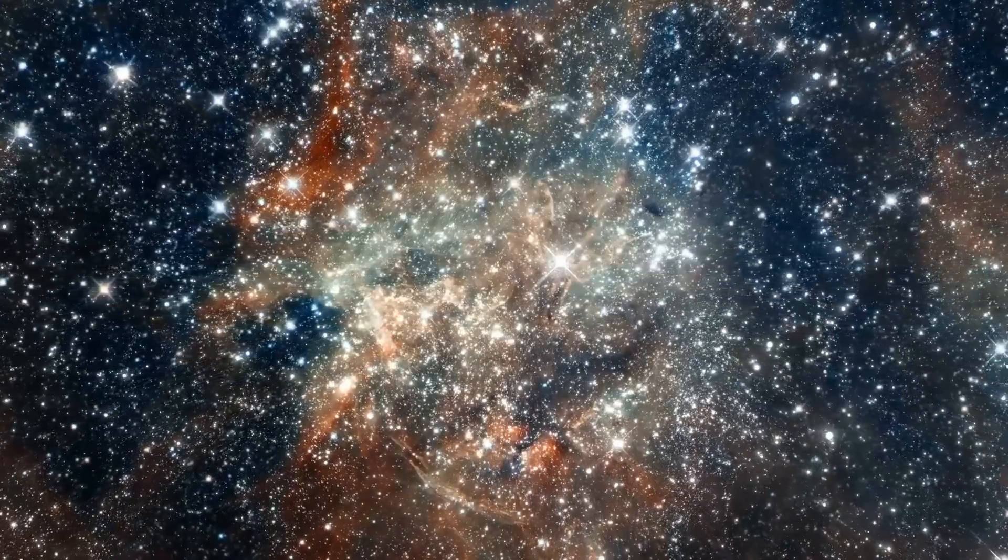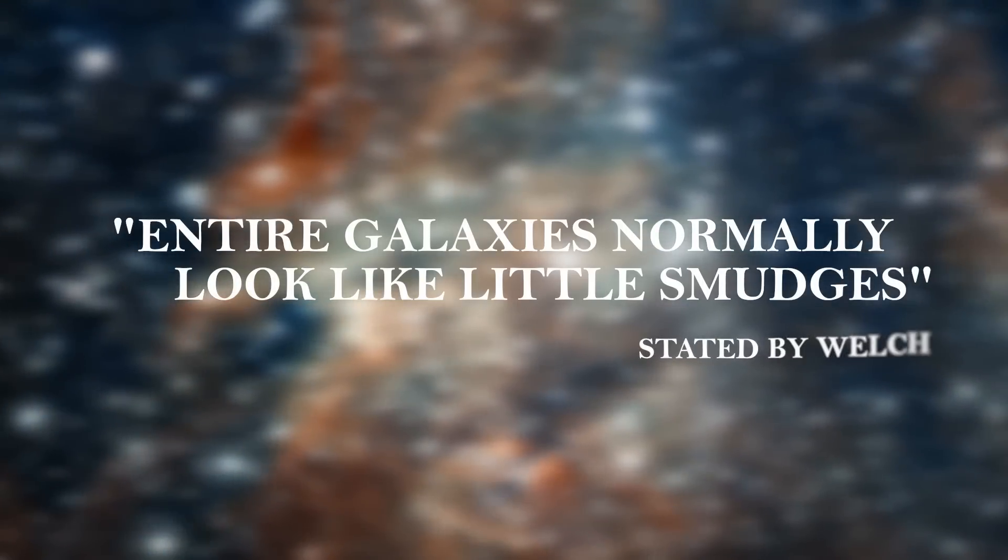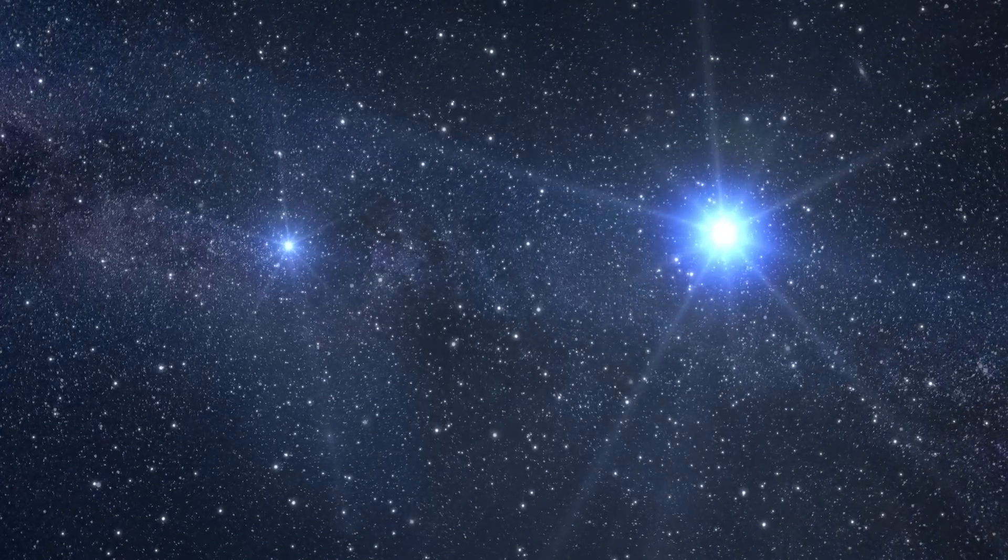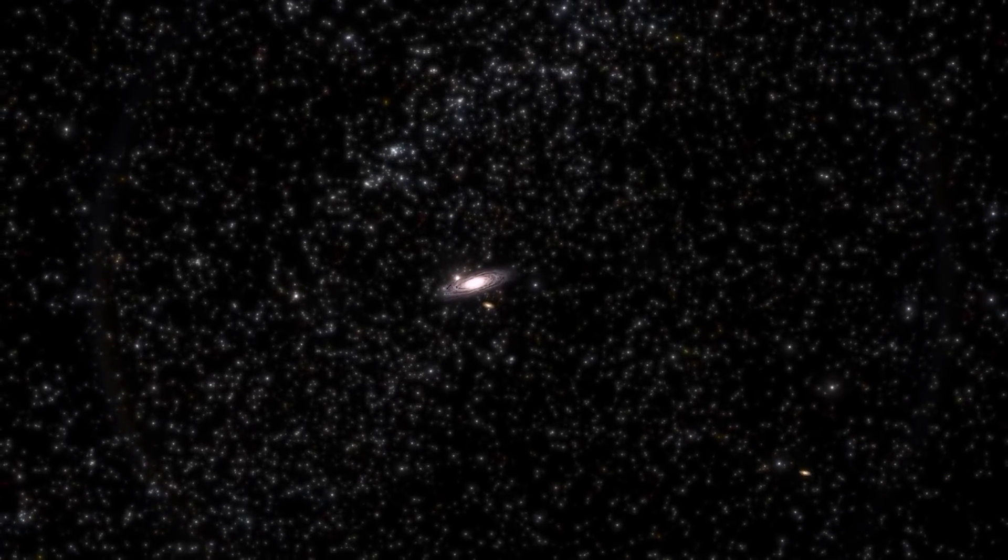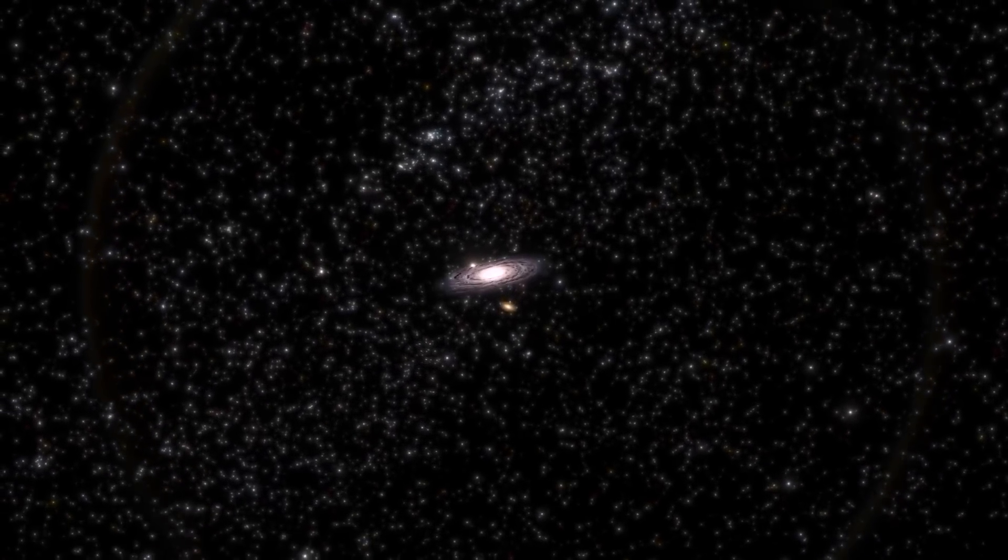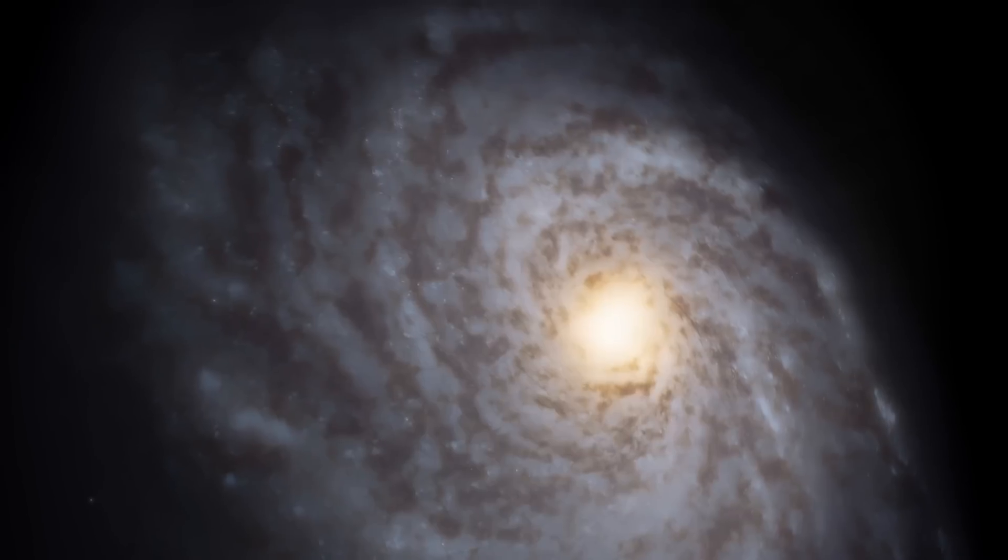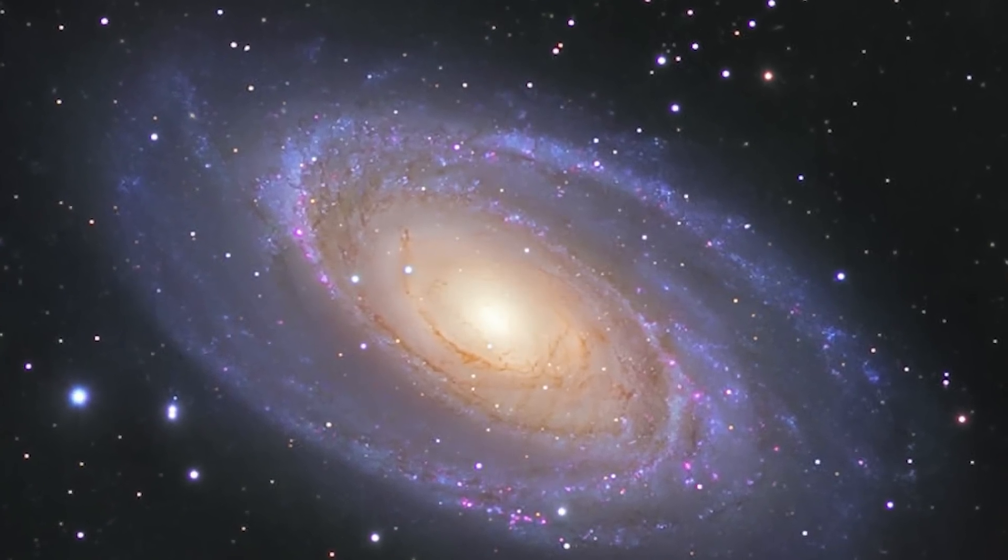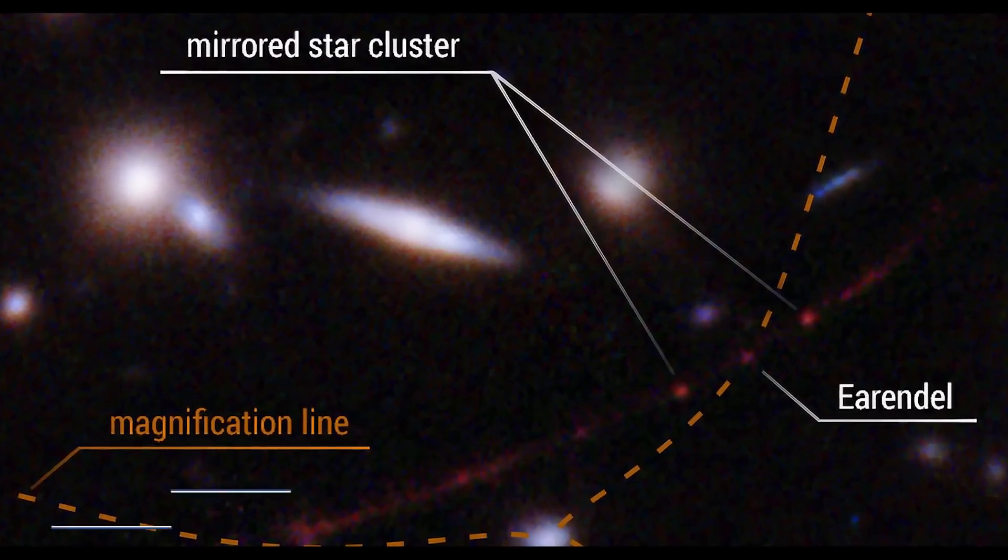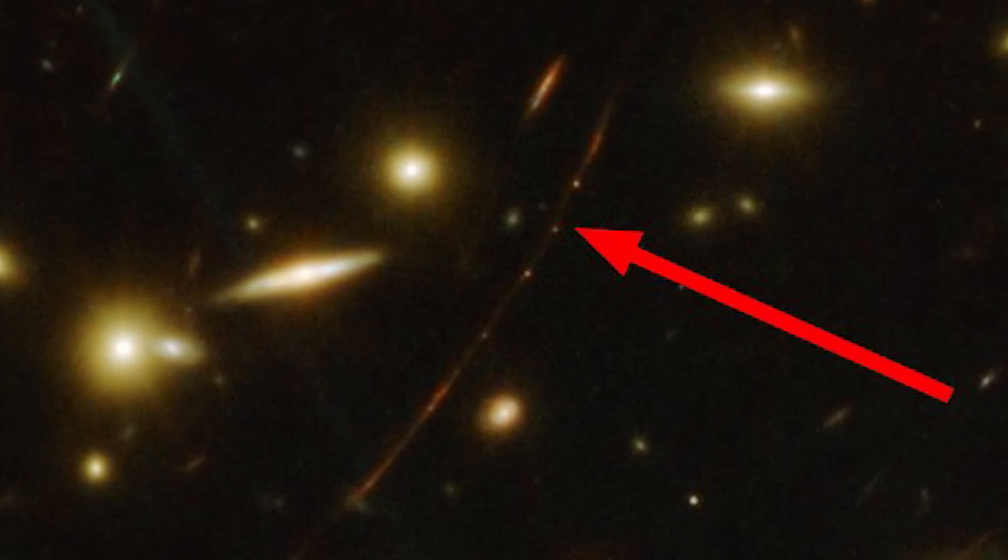When viewed from such great distances, entire galaxies normally look like little smudges, as stated by Welch, because the light from millions of stars blends together. Our observation of the host galaxy for this star revealed that it was enlarged and twisted into a long crescent shape by gravitational lensing. We dubbed this shape the Sunrise Arc. Welch studied the galaxy in depth, and one of its features turned out to be a greatly enlarged star he named Earendel, which literally translates to Dawn Star in Old English.